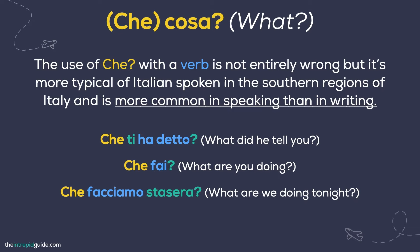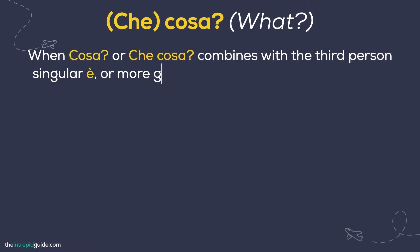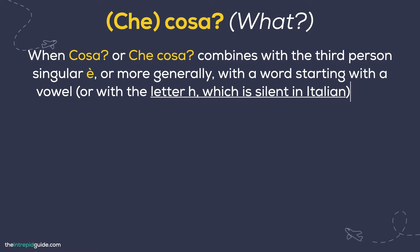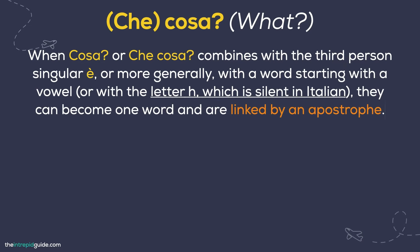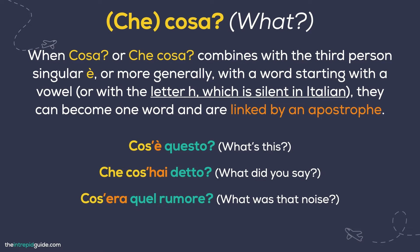Do you remember what happens with the interrogative dove when it combines with è? The same thing happens here as well with cosa or che cosa. It combines with the third person singular è, or more generally with a word starting with a vowel or the letter H, which is silent in Italian. They can become one word linked by an apostrophe. Examples: Cos'è questo? What's this? Che cosa hai detto? What did you say? Cos'era quel rumore? What was that noise?